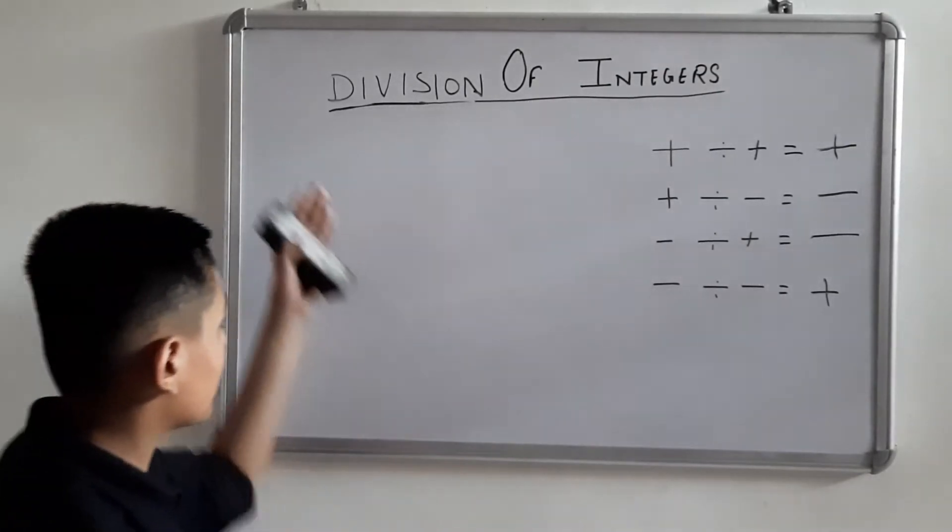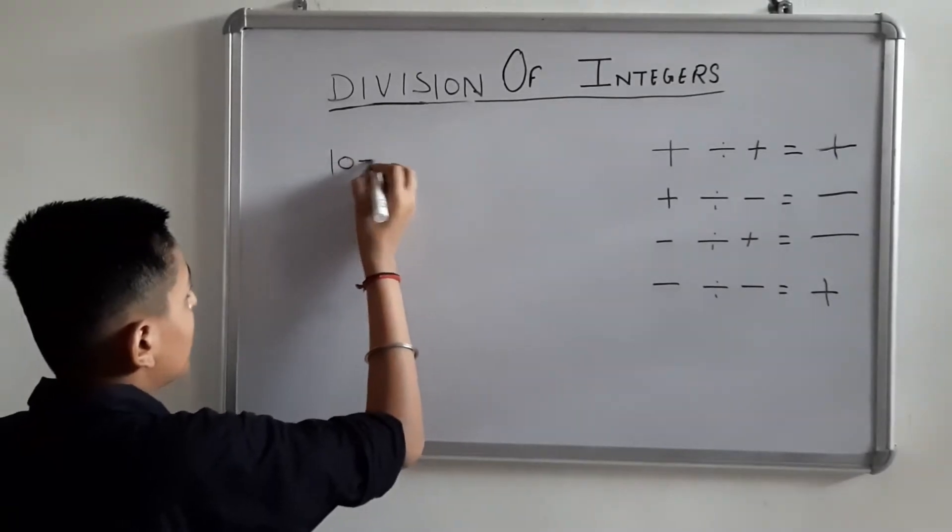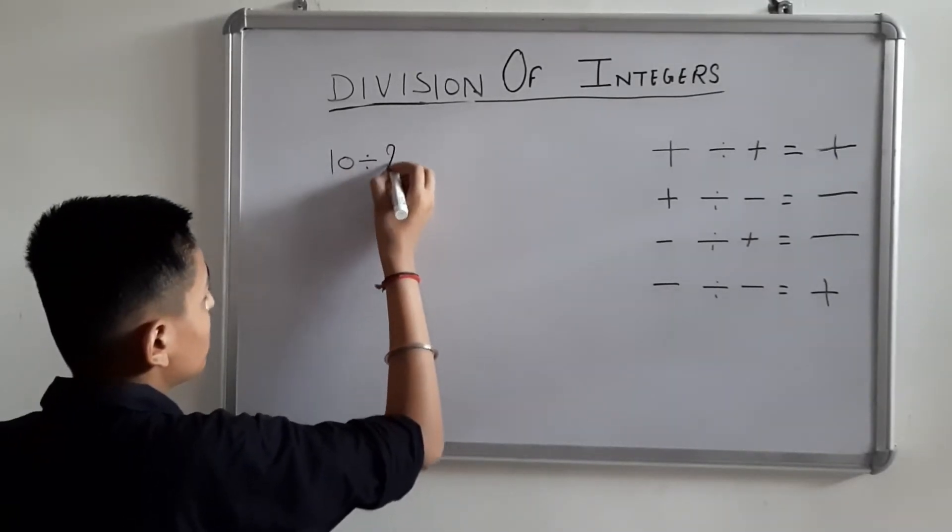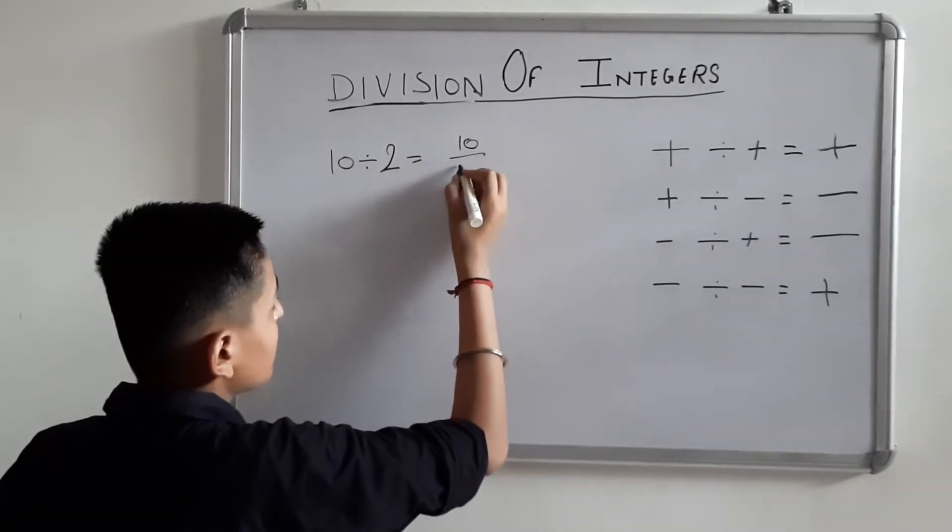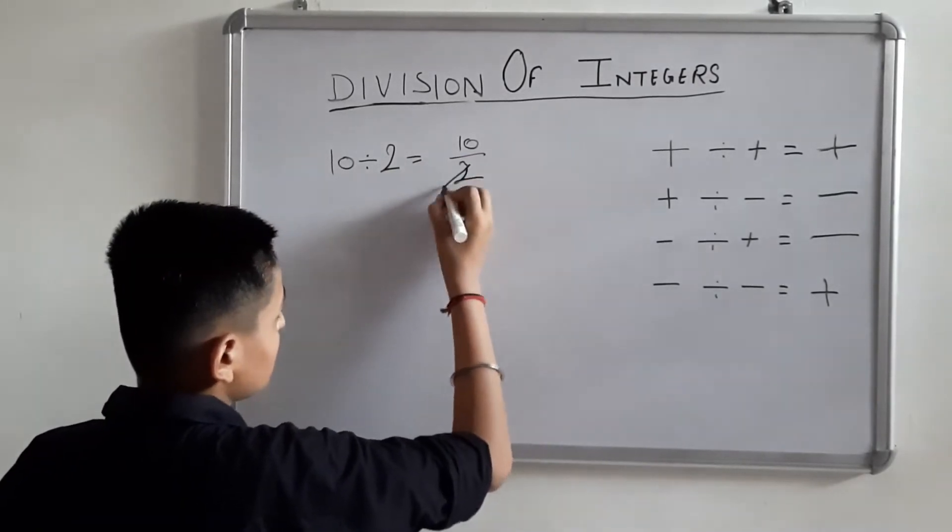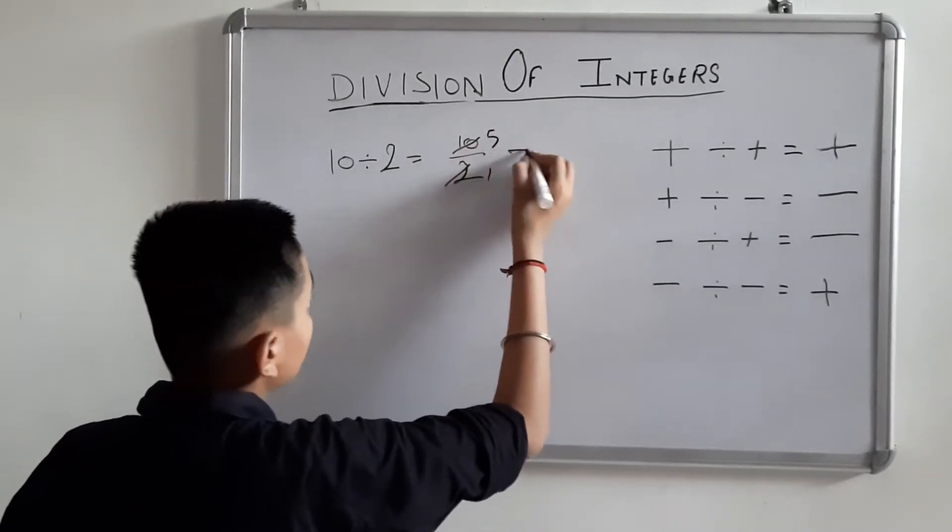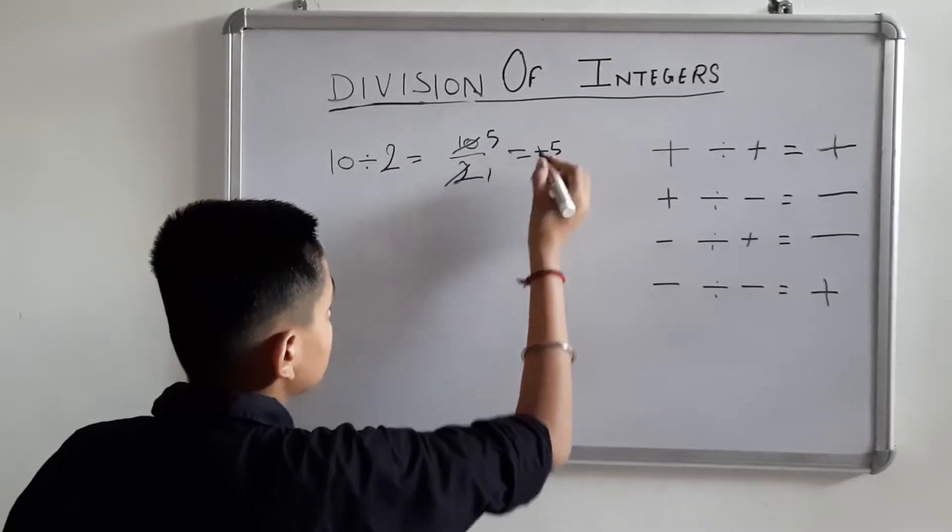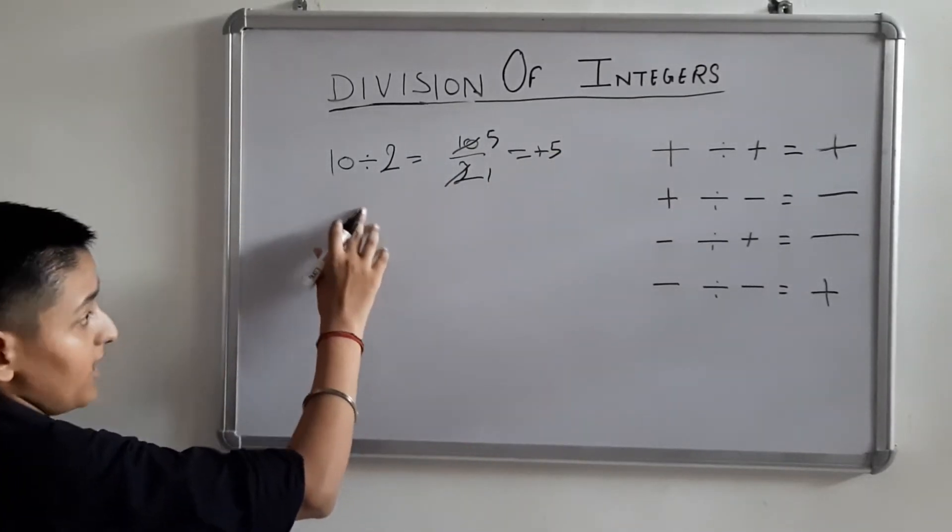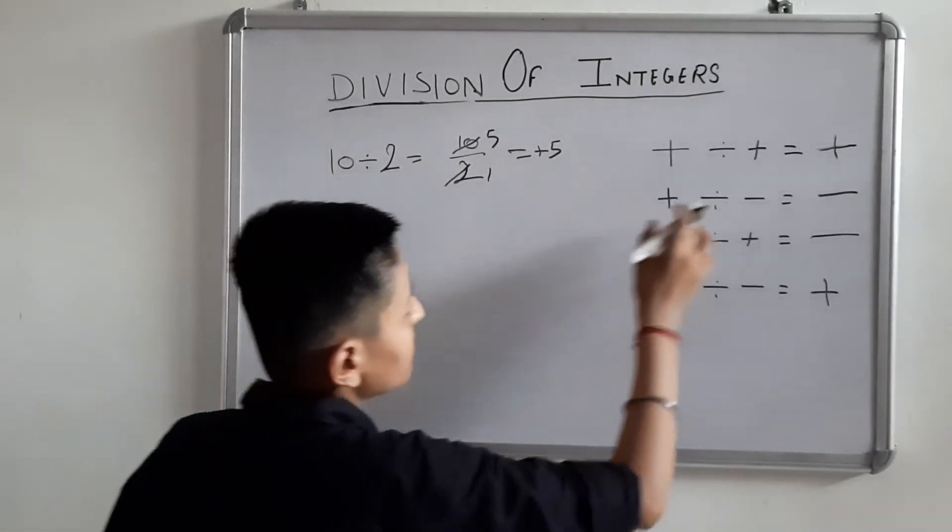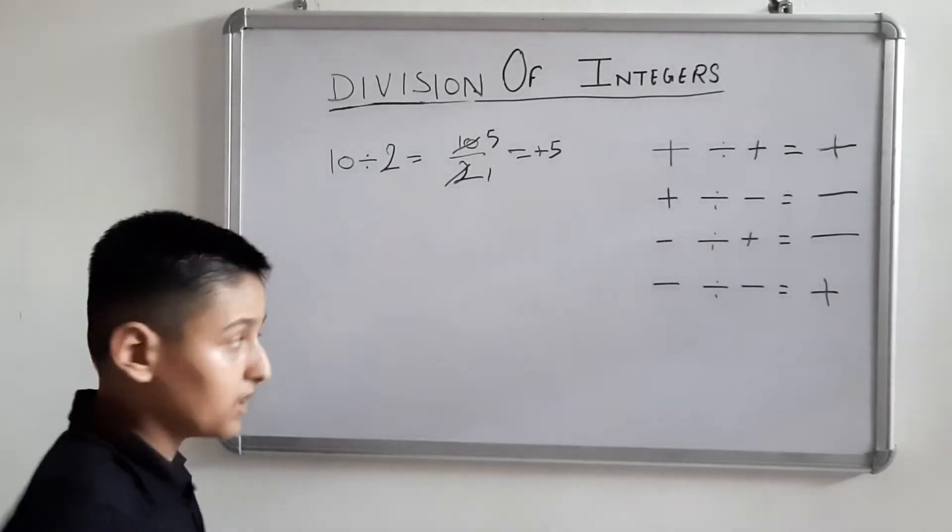If you forget, take some examples. Like 10 divided by 2 equals 10 over 2, which equals 5 plus. Because there is no sign, it means plus 10 and plus 2. This example is of plus divided by plus equals plus.